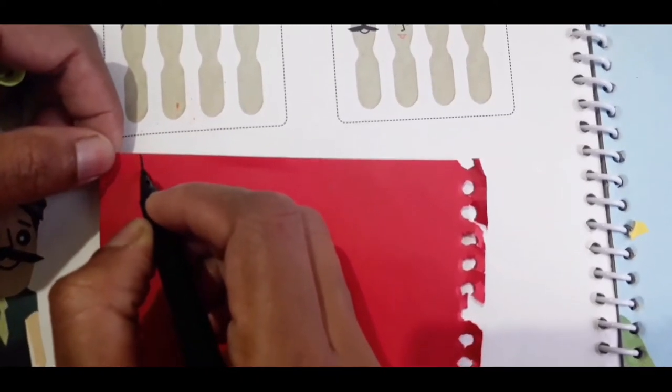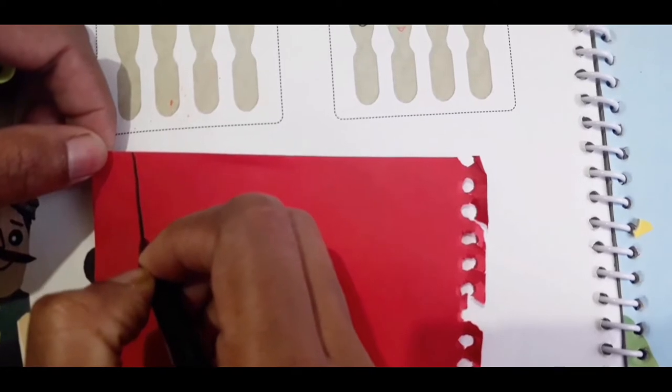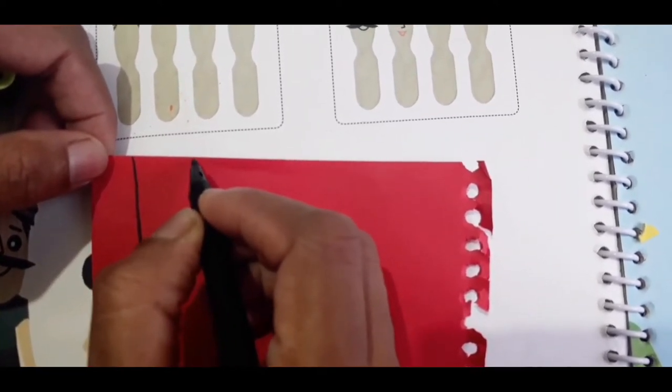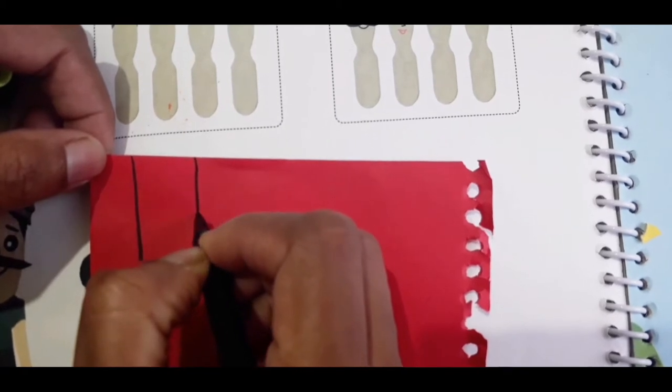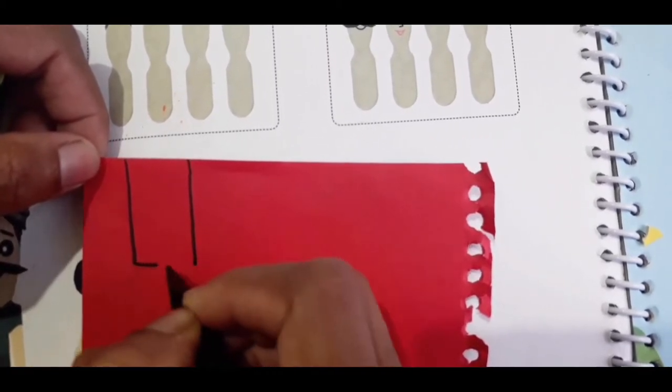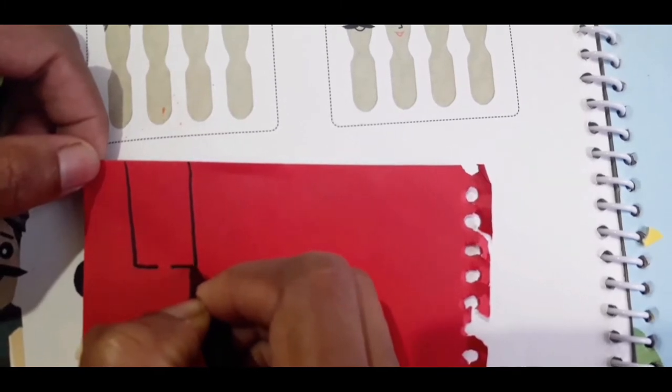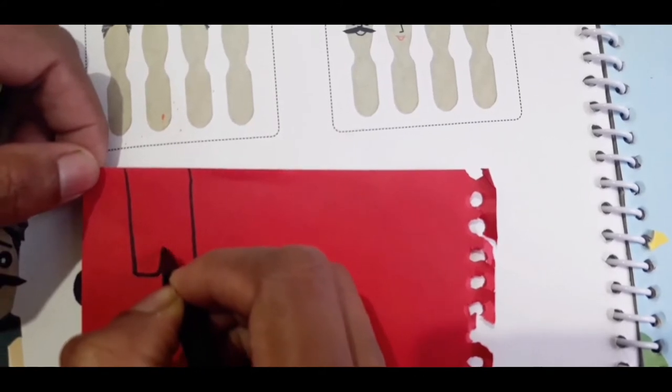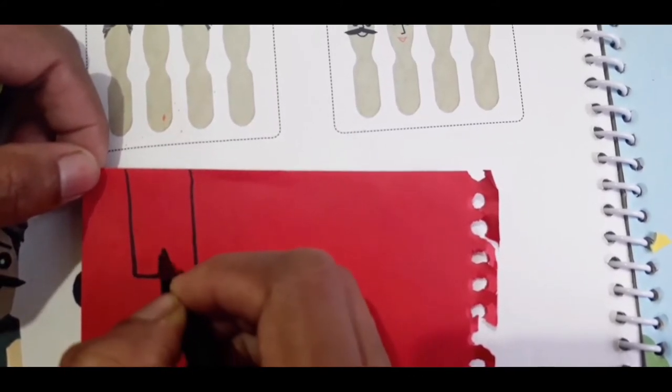One big standing line, okay, one more big standing line. Then come down, you need to make a sleeping line and then a small open triangle.